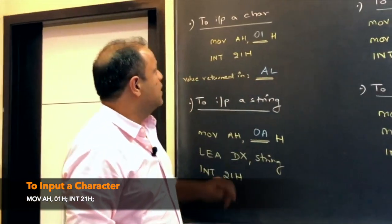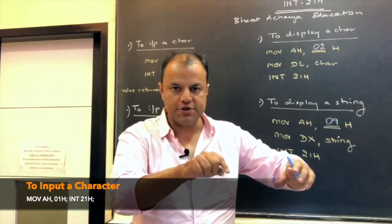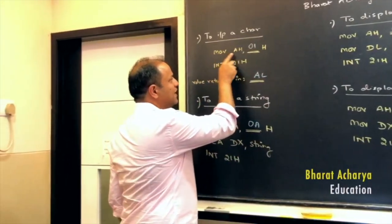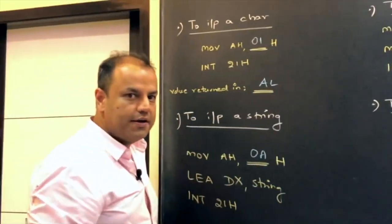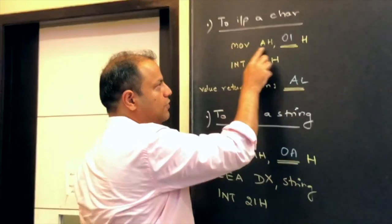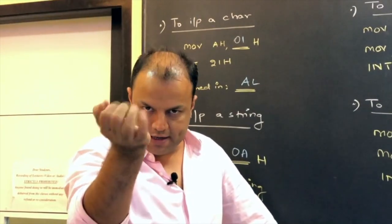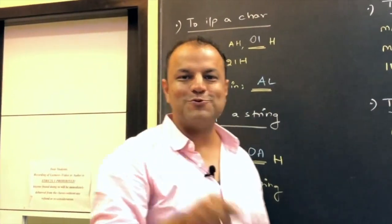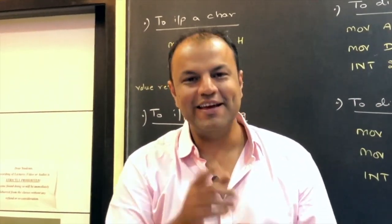So, we begin with the first function of INT21. To input a single character. What does that mean? To input one single keystroke on the keyboard. A single keypress on the keyboard is called a character. So, to take that from the screen, you use MOVE AH comma 01. Remember, I told you every time the number over here will change. That number will decide which function of INT21 you'll use. When you execute these two lines, there will be a cursor blinking on the screen. Whatever the user types will be taken from the screen and given to you in your program in AL register.